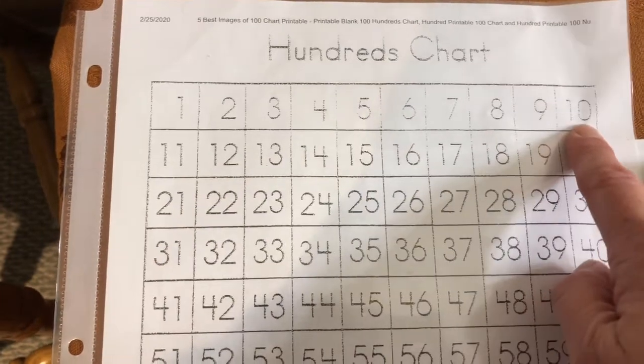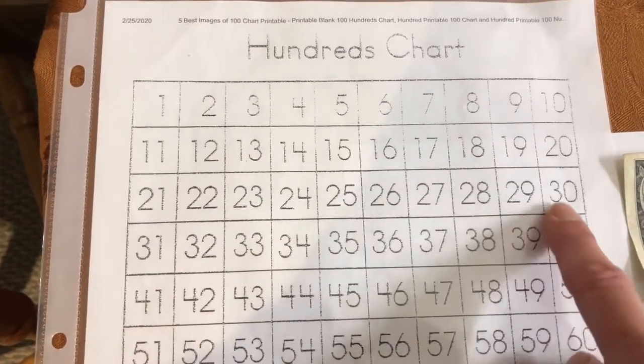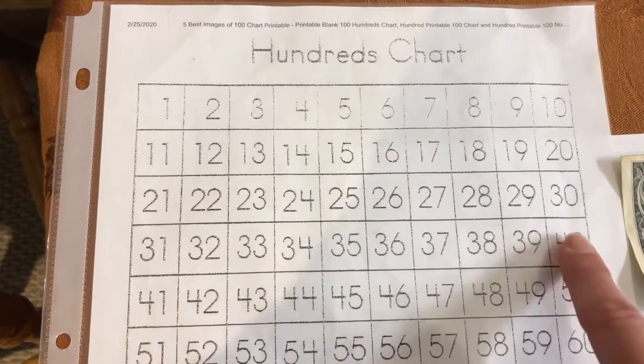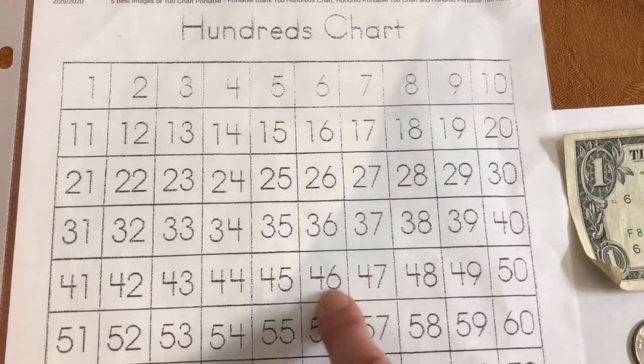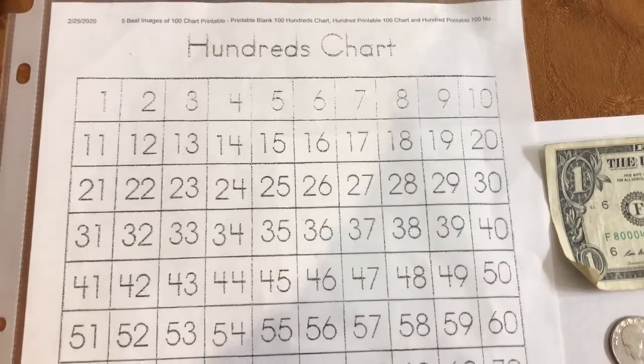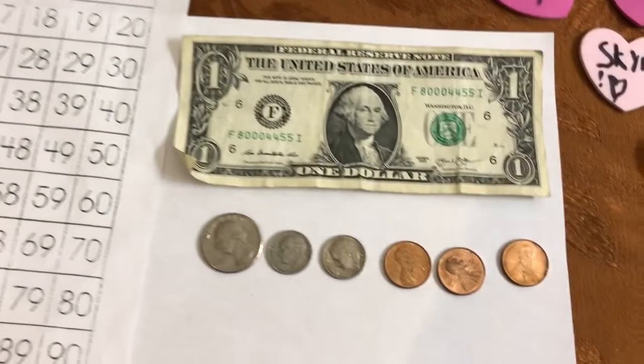1, 2, 3, 4, 5, 6, 7, 8, 9 nickels. And then you need those 1, 2, 3 pennies. 9 nickels and 3 pennies. That would also take us to 48.